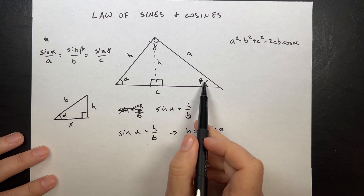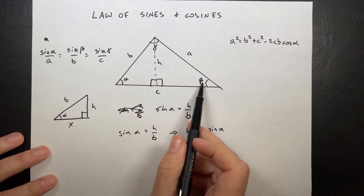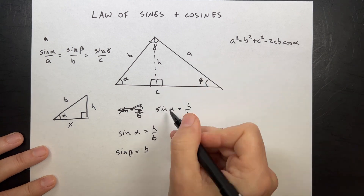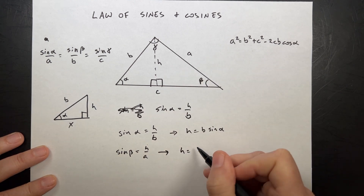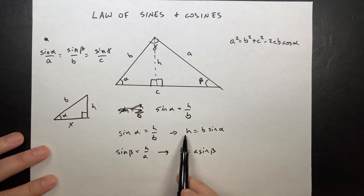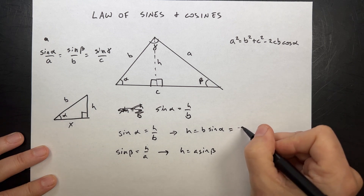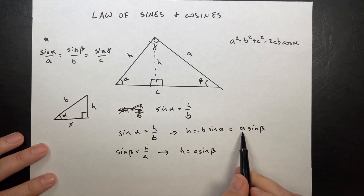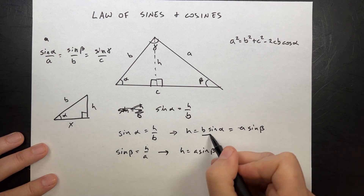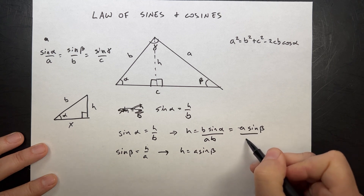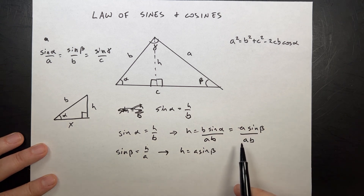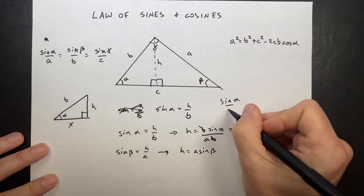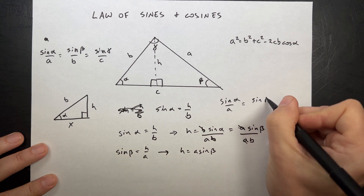Now let's do the same thing over here. This is also a right triangle. So I'm going to take the sine of beta. Sine beta is opposite, which is h, over this side a. And so again, I'll solve that for h: h equals a sine beta. Well, that's h and that's h, so these two things have to be equal to each other. So b sine alpha equals a sine beta. Now I'm going to divide both sides by ab — that b cancels, that a cancels — and I get sine alpha over a equals sine beta over b.